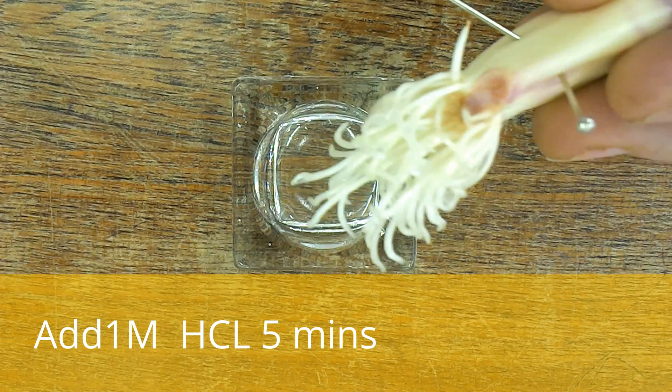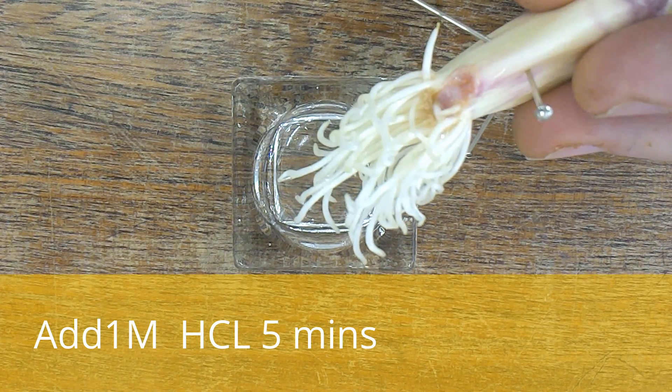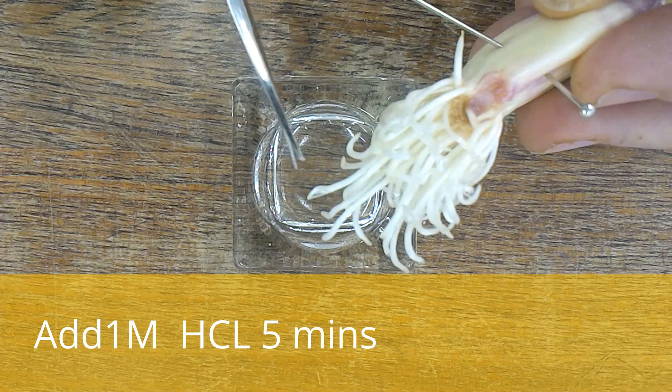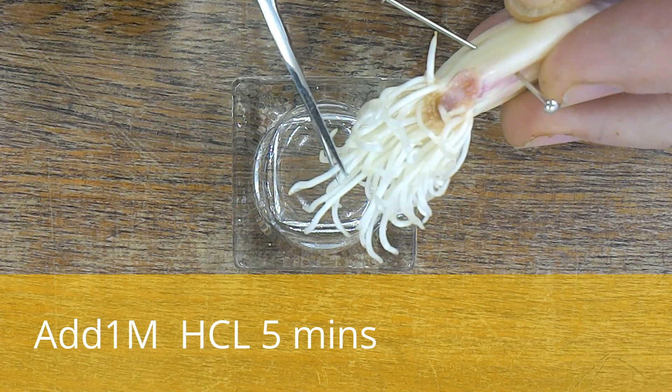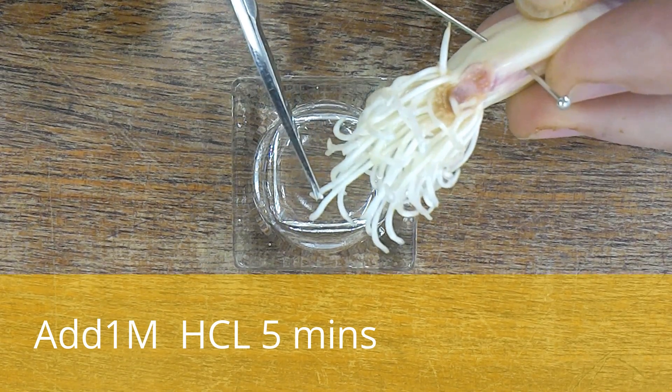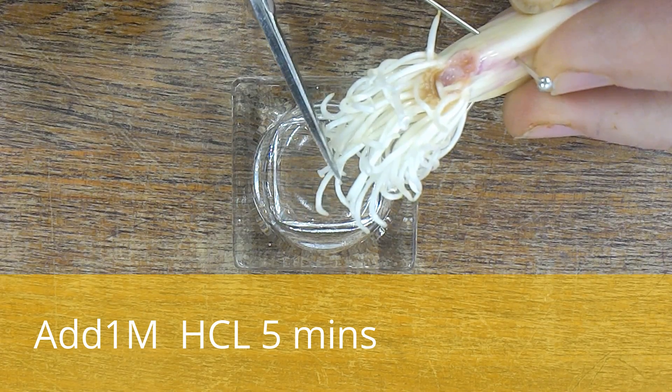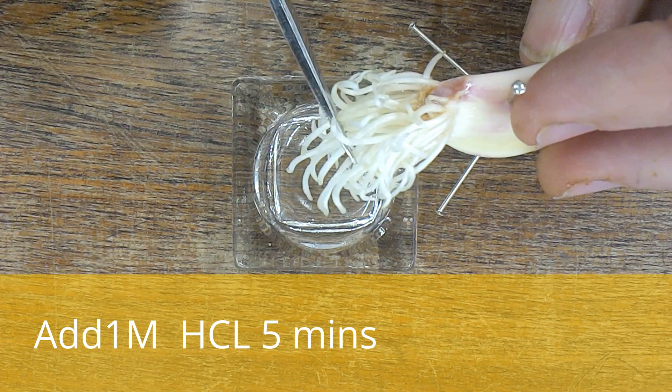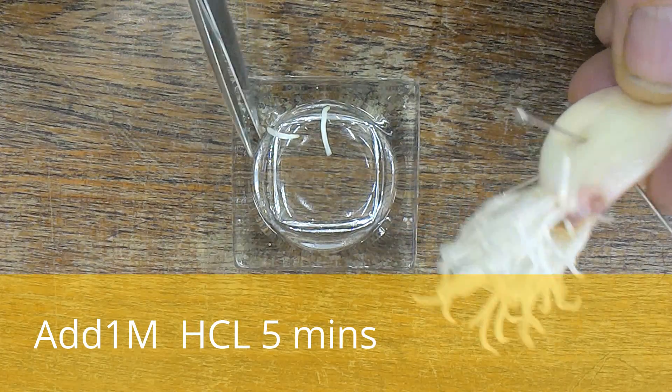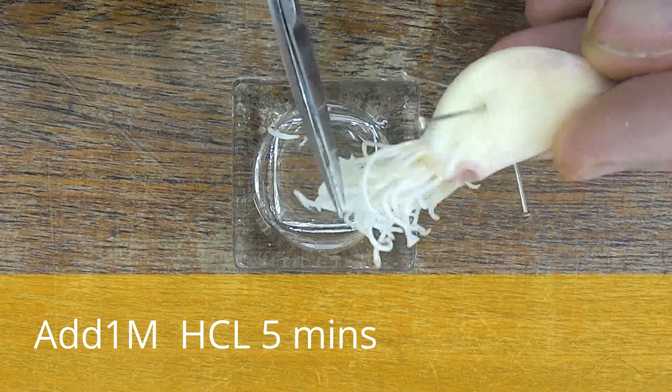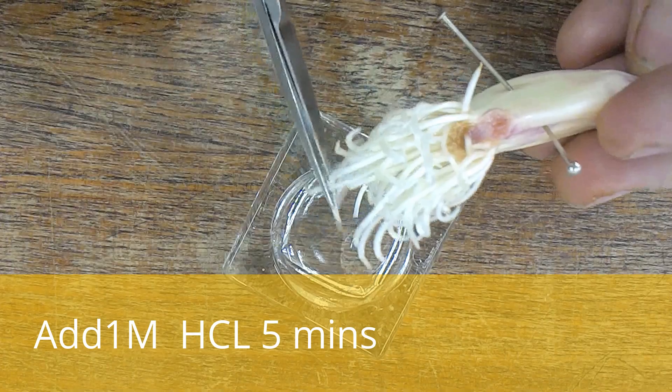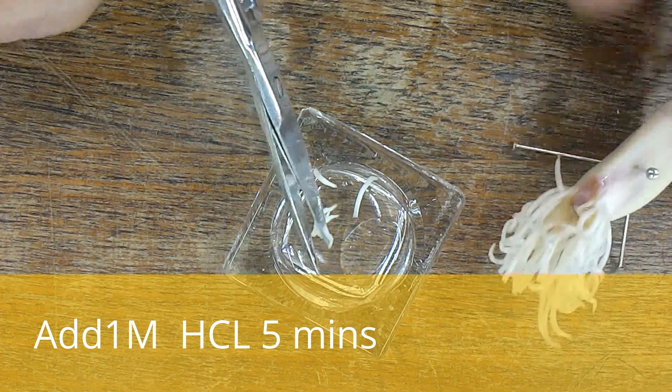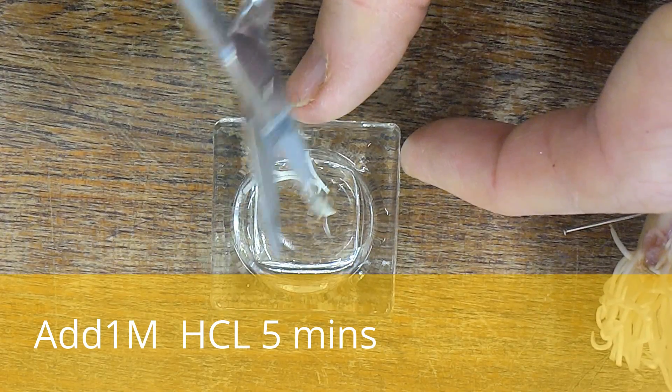To prepare garlic root tips for mitosis, we're going to cut off one centimeter from the growing end of five roots, putting them into a glass block. I'm dropping them in there. You get several tips; I've got more than five, quite a few there.